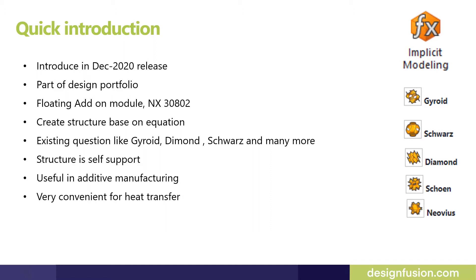Implicit modeling basically creates structures with equations. Siemens NX has pre-configured structures like the gyroid structure, diamond shape, and many more. The good thing about these structures is they are self-supportive, so in additive manufacturing you don't need to create support structures. Additionally, these structures are very convenient for heat transfer performance or heat transfer applications.